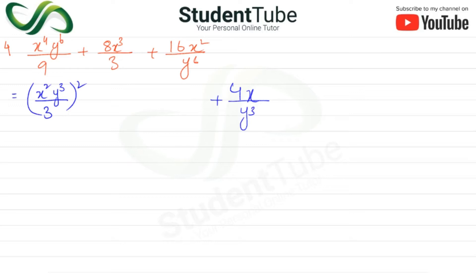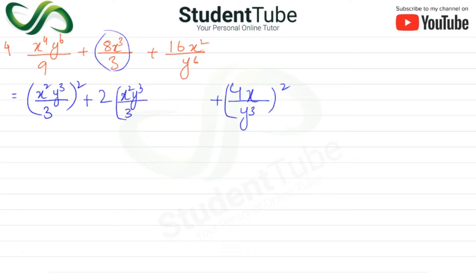So let's take the square root. What will happen? 4 times 4 is 16. X squared, 3 and 2 is 6, and Y. Now let's see here — this is A squared, this is B squared. So here we can make it a plus b form, so here we can make it 2ab. A is the square root, this is A, this is A. And B is 4X upon Y cubed.